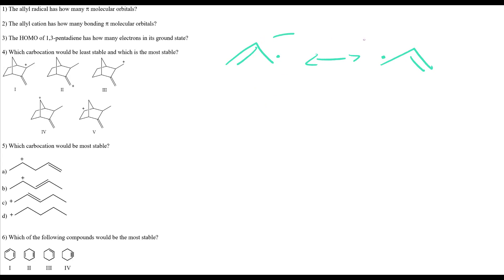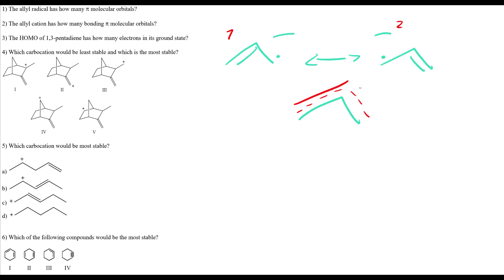Let's draw the resonance structure with three carbons and then a hybrid structure. This double bond can jump between figure 1 and figure 2, so the hybrid has a double bond on both sides at the same time — it's an in-between structure.